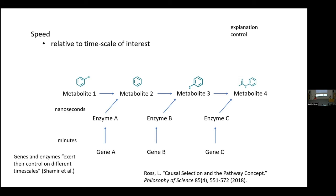Second reason why this distinction matters: control. Causes that operate on different timescales give you very different types of control. Suppose you have two drugs that both cause pain relief — one gives relief in two minutes, the other in two hours. If a patient will have maximum pain in two minutes, you want to give the first; if maximum pain in two hours, you give the second. The speed at which causes operate is objective — I don't get to control what that is. What I do get to determine is which cause I target, depending on the speed of control I want.